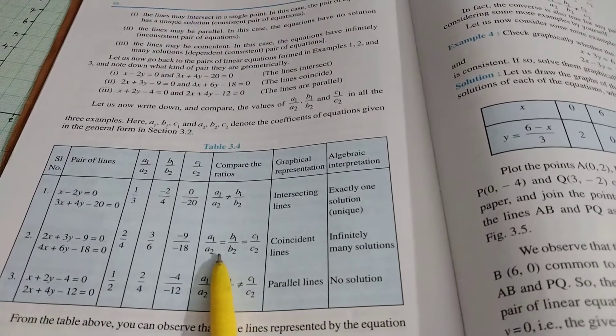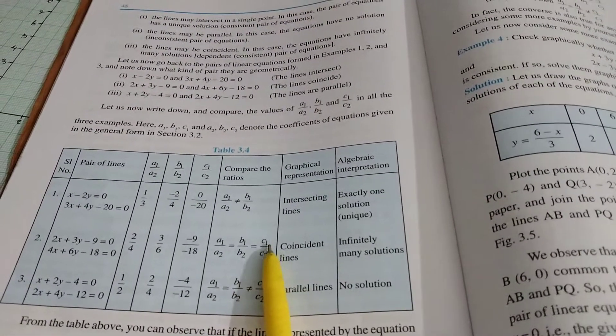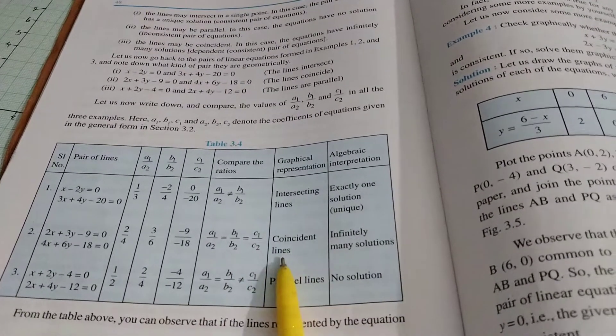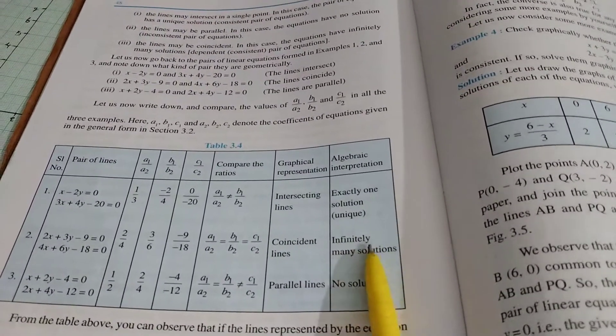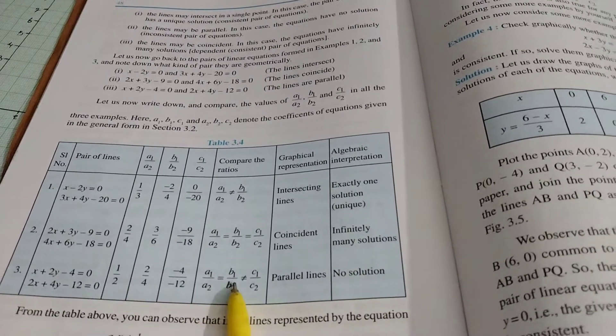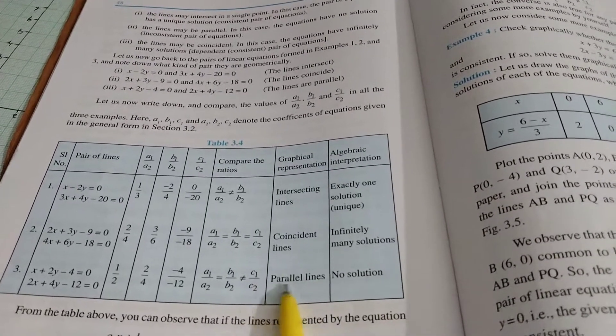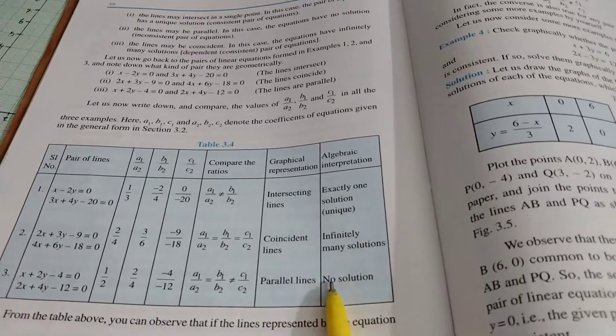Next, A1 by A2 equal to B1 by B2 equal to C1 by C2 is called coincident line. That is infinite many solution. Next, A1 by A2 equal to B1 by B2 not equal to C1 by C2 is parallel line. No solution.